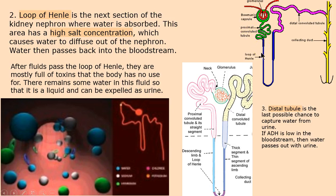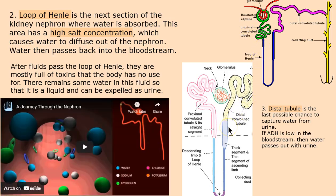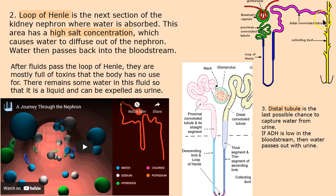We've passed the proximal tubule and now we're on to the loop of Henle. In the loop of Henle, it's real salty, and water is going to pass out of the loop into the bloodstream. It goes down around the corner and comes back up. Then there's the distal tubule, number three — and here's our last chance. If ADH is low in the bloodstream, then we're going to pee like crazy.